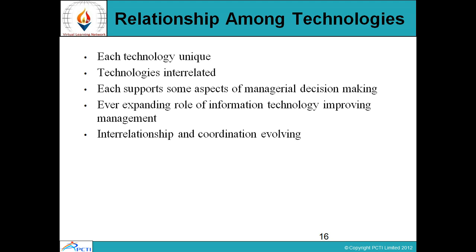Now let's talk about the relationship among technologies. Each technology is of a unique type, and one technology is interrelated with another. Here we discuss what the relationship could be between available and forthcoming technologies. Each technology basically supports some aspect of managerial decision making — whether it is mobile, internet facilities, an exchange server, a web server — they all ultimately help in managerial decision-making power. Every day we find different technological tools, software, and hardware that improve the role of management, and there is a close interrelationship and coordination among different technologies.